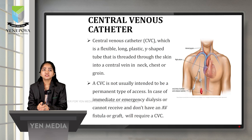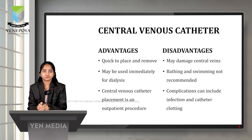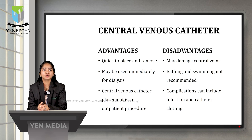A central venous catheter (CVC) is a flexible, long, plastic Y-shaped tube inserted through the skin into a central vein in the neck, chest, or groin. CVC is not usually intended to be a permanent access. It is used in emergency or immediate dialysis situations, or when the patient cannot receive an AV fistula or graft. Advantages: quick to place and remove, may be used immediately, and placement is an outpatient procedure. Disadvantages: may damage central veins, bathing and swimming not recommended, and complications can include infection and catheter clotting.